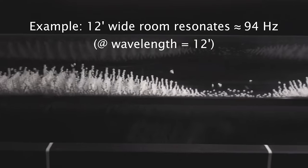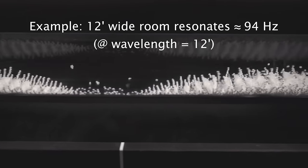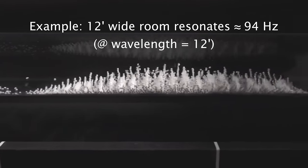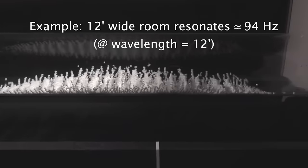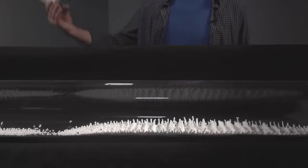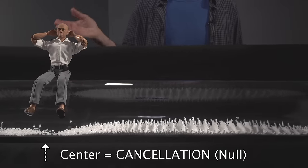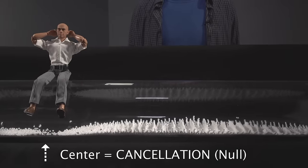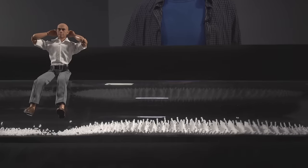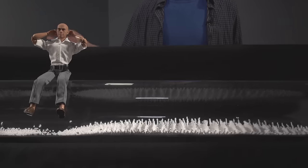For example, a 12-foot-wide room will have a resonance around 94 Hz, because the wavelength of 94 Hz is also 12 feet. As a result, if you sit here, you'll hear very little sound around this frequency, because in the center, room modes cancel energy, causing a null in level.